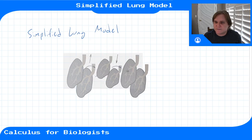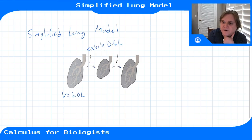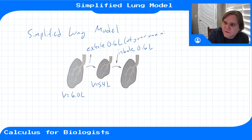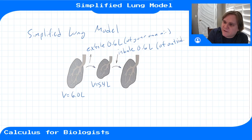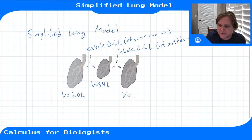We have this simple system where we have a volume in our lungs of 6 liters. You take a breath, first you exhale 0.6 liters, so your volume is 5.4 liters, and then you re-inhale that same amount — 0.6 liters of outside air. So then you've re-inhaled what you lost and you have the original volume again: 6.0 liters.